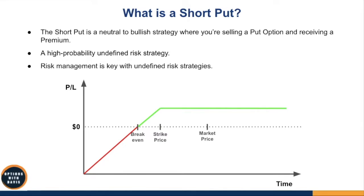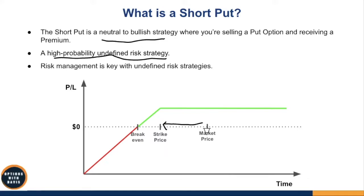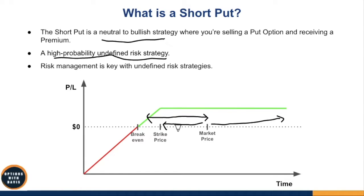The short put is a neutral to bullish strategy where you're selling a put option and receiving a premium. It's a high probability, undefined risk strategy. We sell the put option at a strike price that is quite a distance away from the market price, giving us a higher than 50% probability of win. Even if you're slightly wrong on direction, you can still profit — unlike buying stock outright, where you need the market to go above your purchase price to profit.